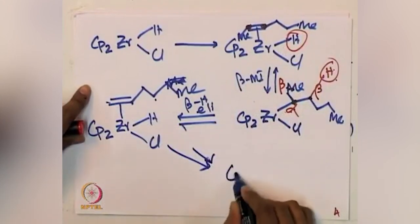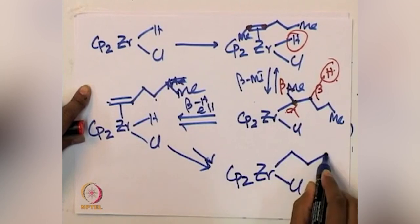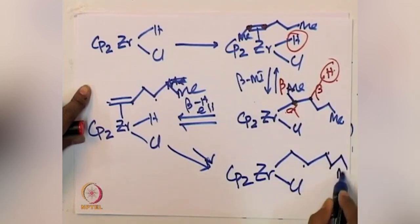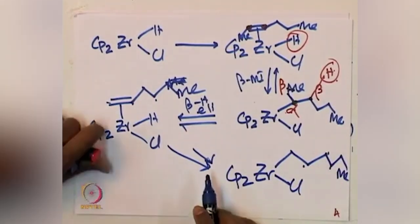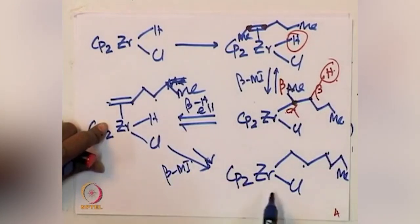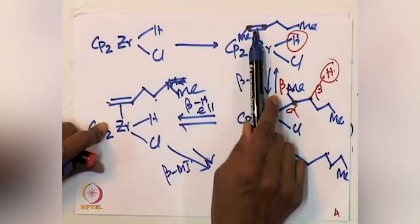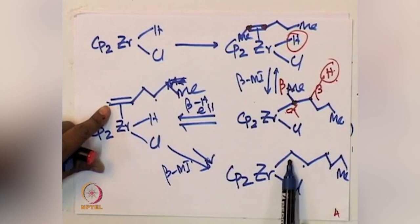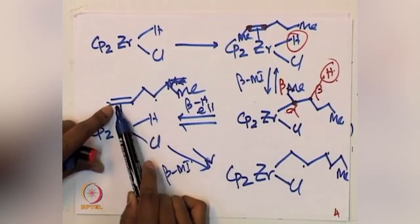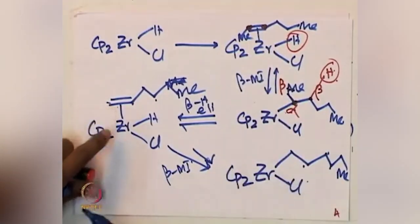Irrespective of the starting olefin and the positioning of the double bond, you are able to transfer the double bond from an internal to a terminal position. Starting from an internal olefin you can convert it into a terminal olefin. Wherever the double bond is located, the olefinic double bond can be moved to the terminal position, giving a very stable primary metal alkyl species. This is how double bond isomerization actually occurs.